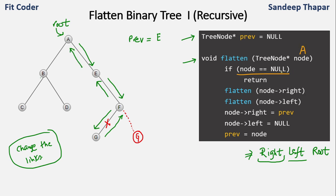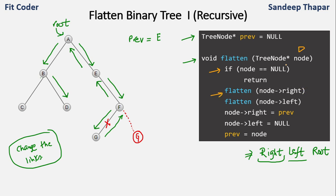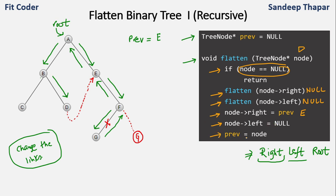Now we go to node A and call flatten for the left of A, which is B. We check if B is null, then call flatten for the right of B, which is D. For D, we call flatten for right of D — null, that returns. Then for left of D — also null, that returns. We set right of D to previous E, and left of D is already null. Then we set previous equal to D. The function call to D ends and we go back to B.